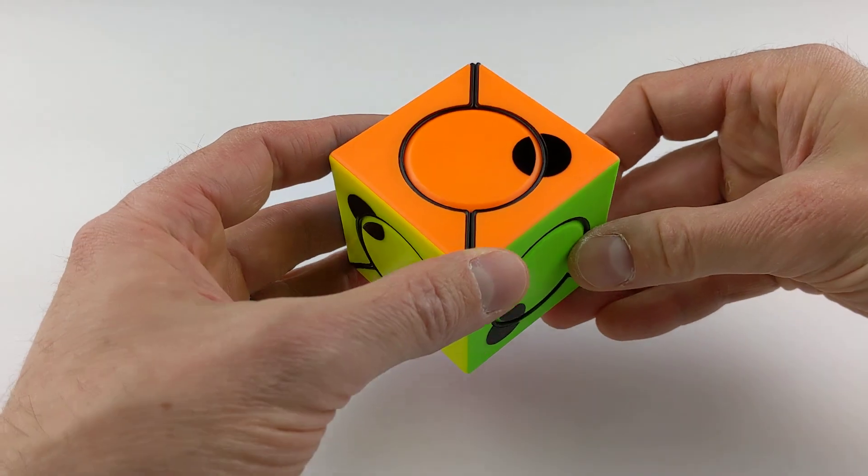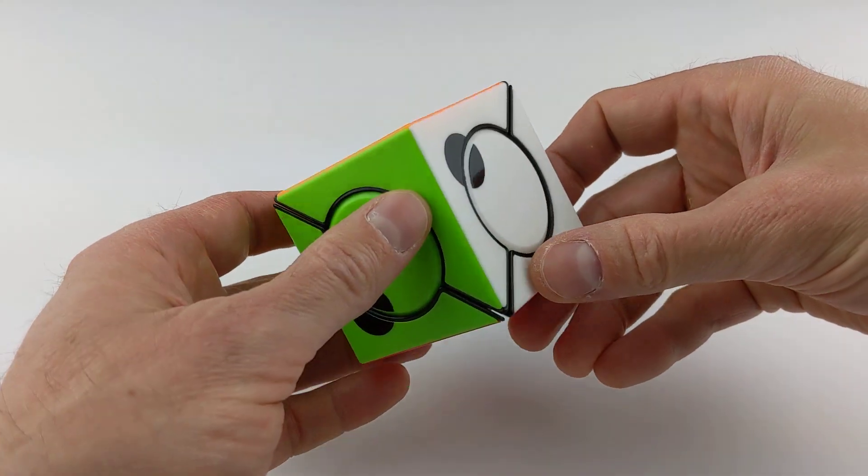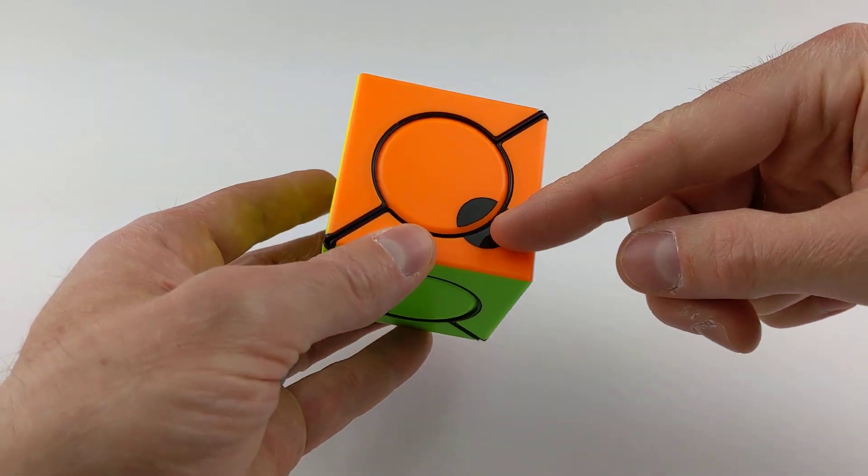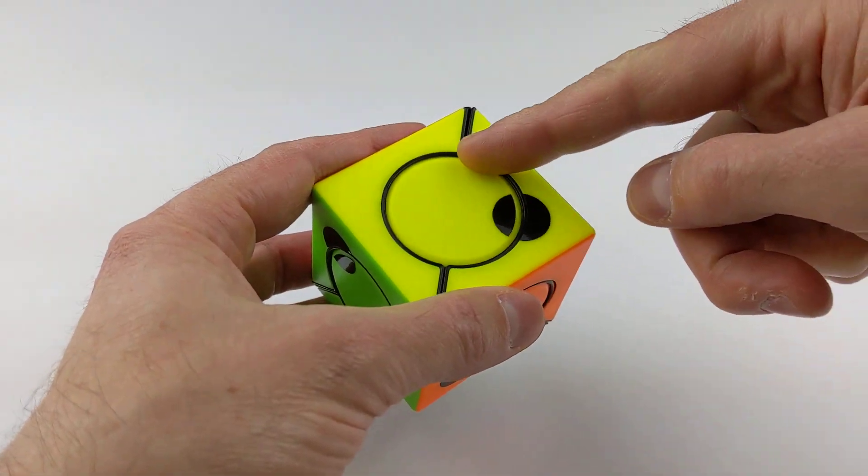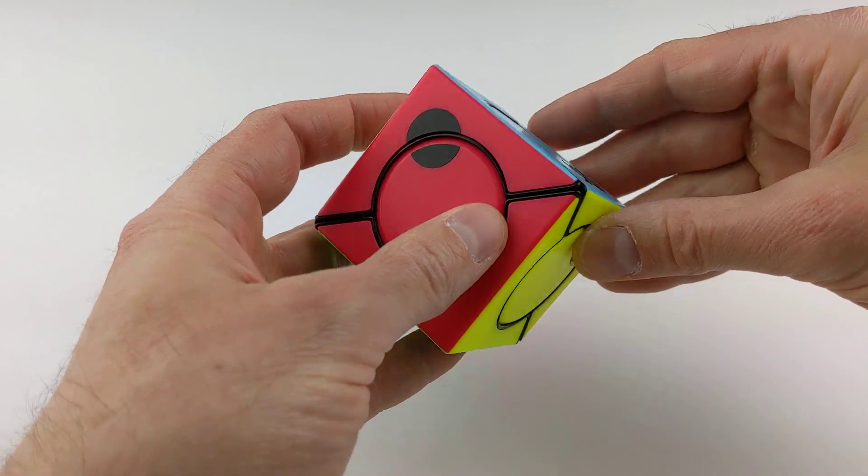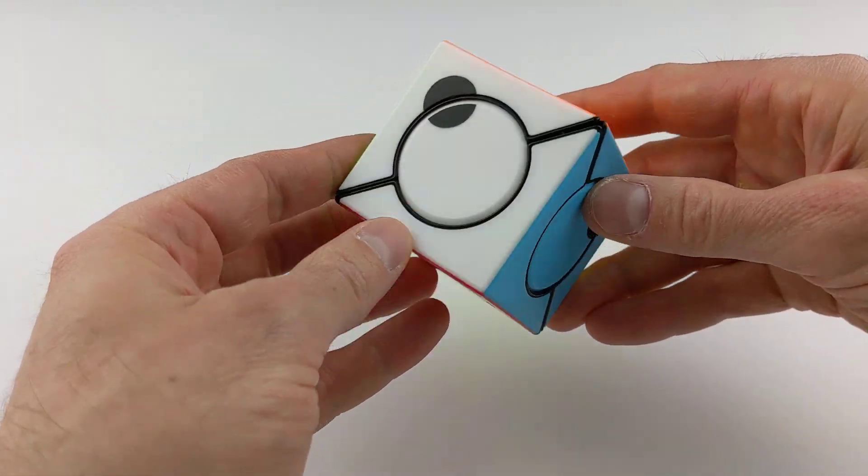So I took the stickerless versions and I made just that, a super six-spot cube. In this case, I used a simple dot off-center on each face and split by the larger central dot in order to provide that orientation of the central dot on each face.